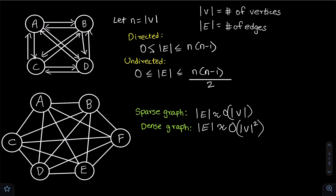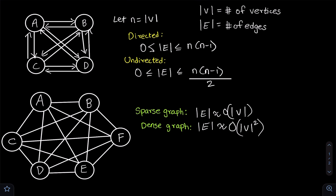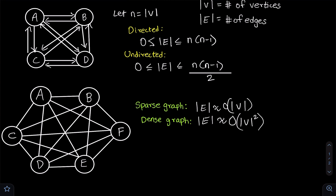Now let's look at the minimum and maximum number of edges an undirected graph can have. The minimum remains zero. The maximum is the number of vertices multiplied by the number of vertices minus 1, all divided by 2. We divide by 2 because in undirected graphs, edges are bidirectional — from A to B and B to A is only one edge.